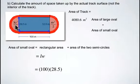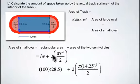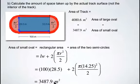The formulas used to calculate our semicircles are pi r squared divided by 2. Since there are two of them, we'll multiply it by 2. After you've worked out the calculation, you should come to a solution of 3487.9 square meters. So now we know what the area of the small oval is as well.